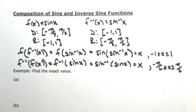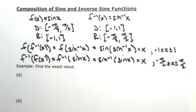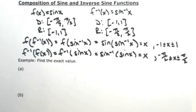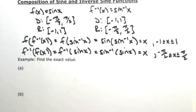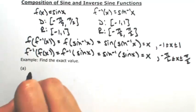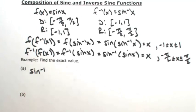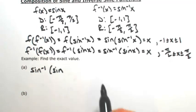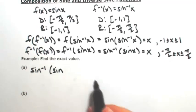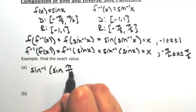So we can do these compositions as long as these domains are satisfied. Let's do a few examples. So let's say I have the inverse sine of sine of pi over 10.